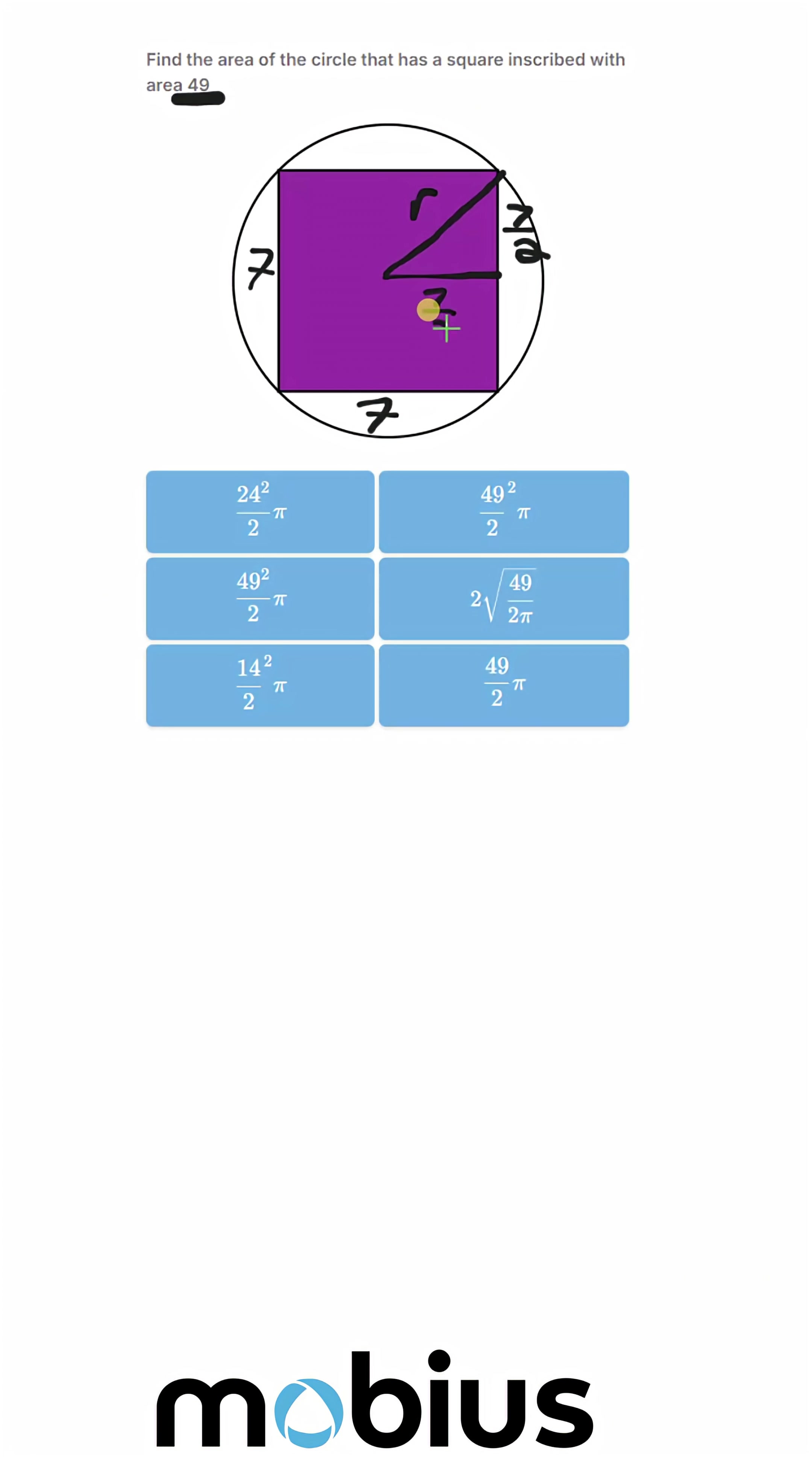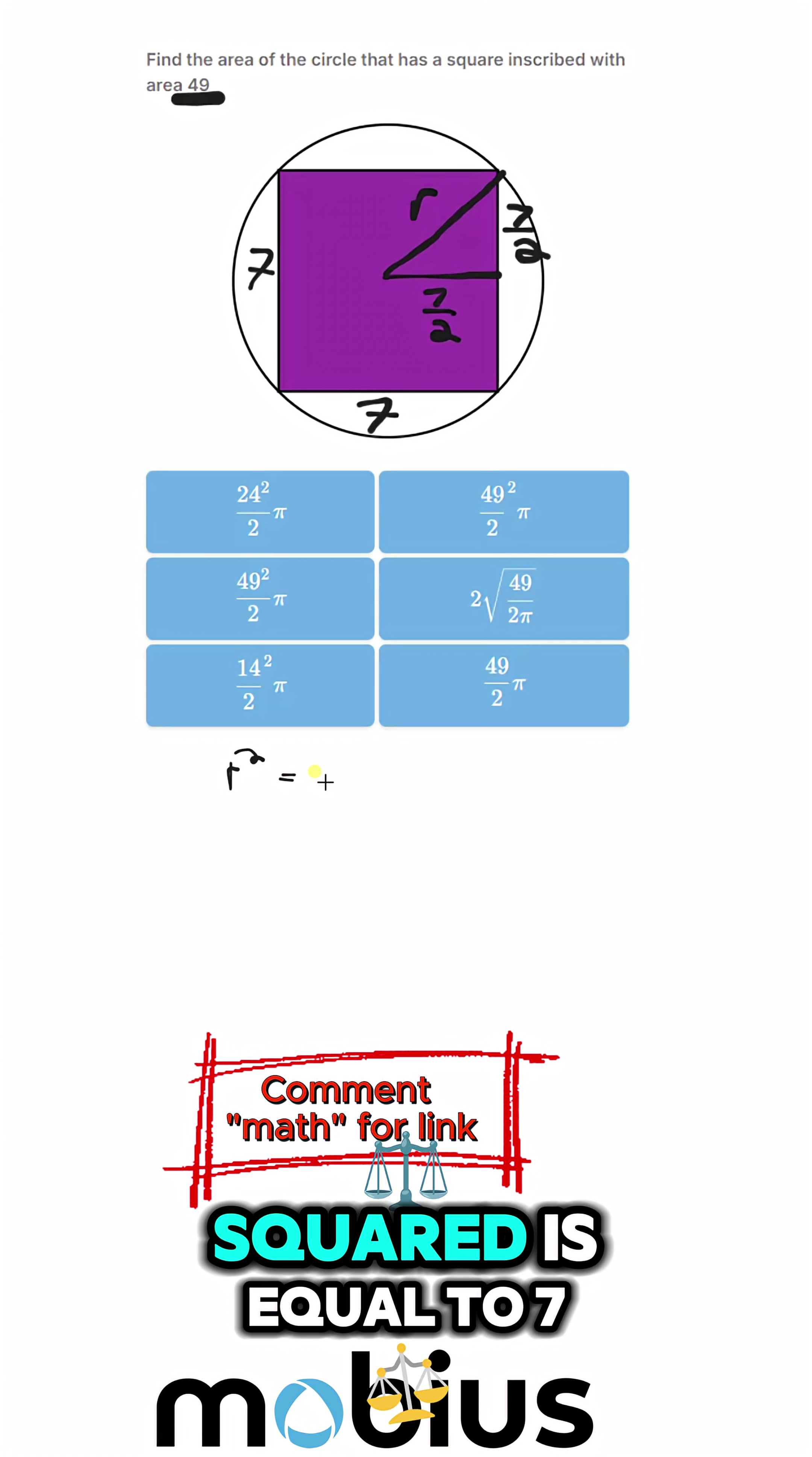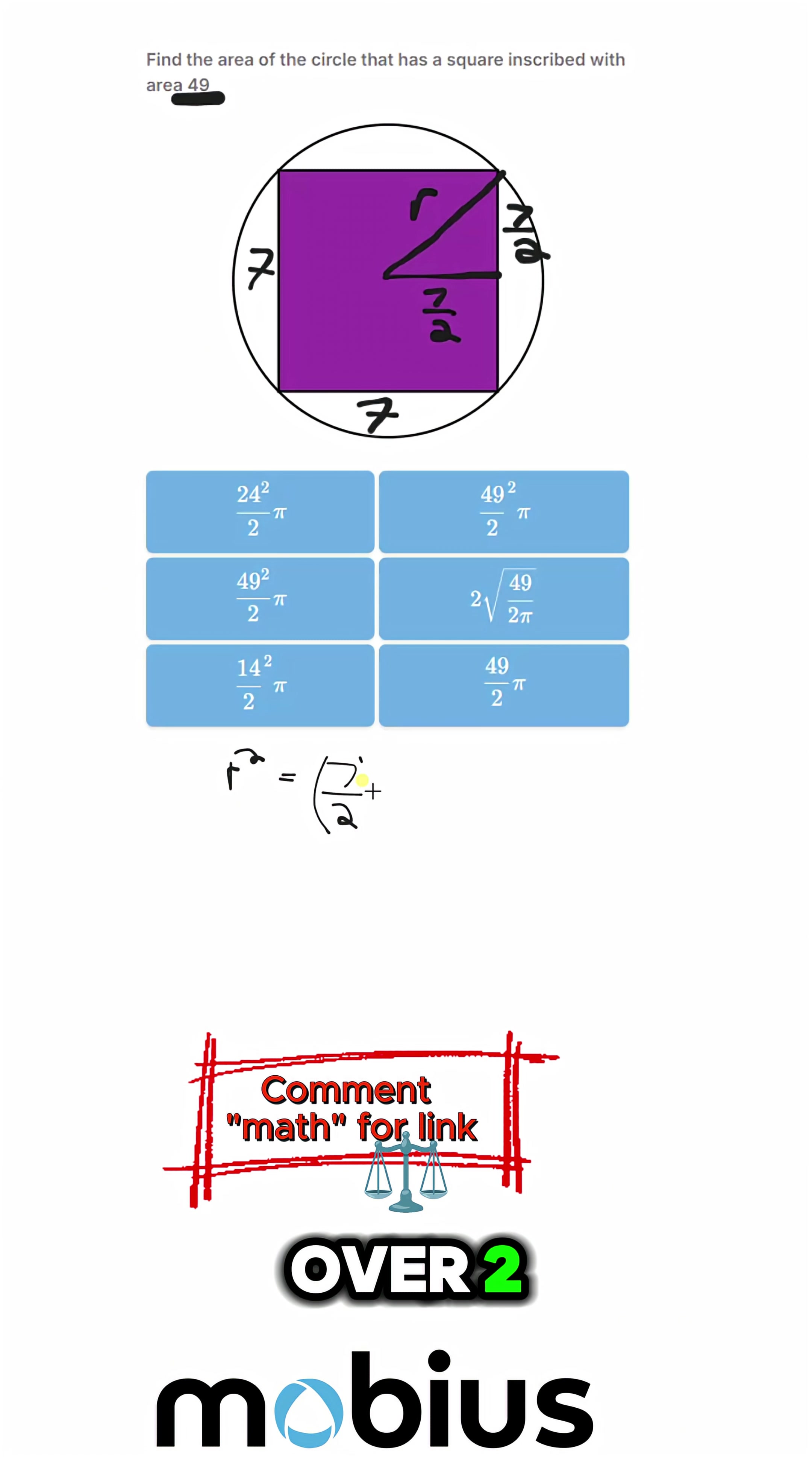So 7 over 2, 7 over 2, and our radius squared equals 7 over 2 squared plus 7 over 2 squared. If we simplify that,